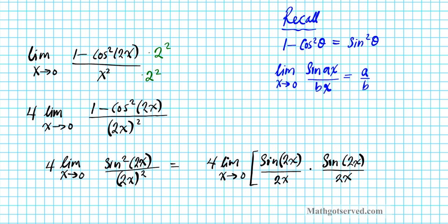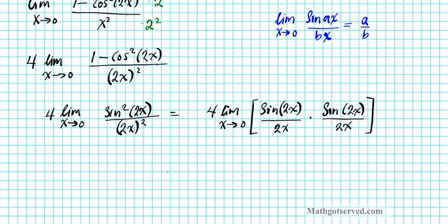Okay now we know that we can take the limit of these two terms term by term, limits as one of the properties of limits. So we can rewrite this limit as 4 times the limit as x approaches 0 of sine of 2x divided by 2x times the limit as x approaches 0 of sine of 2x divided by 2x.